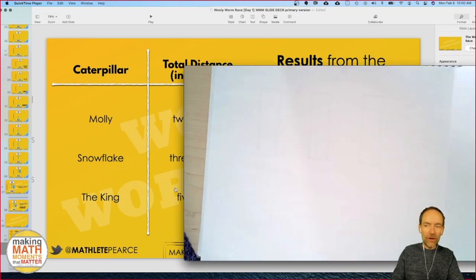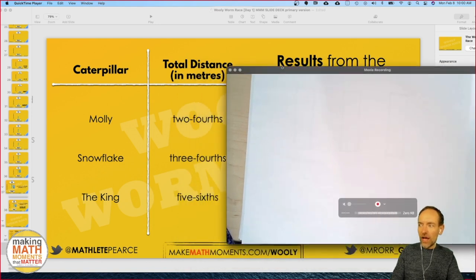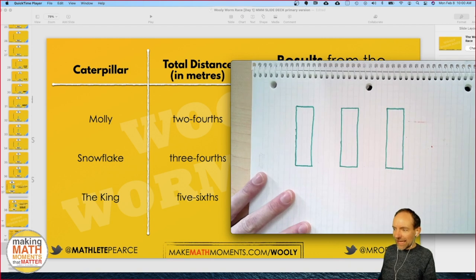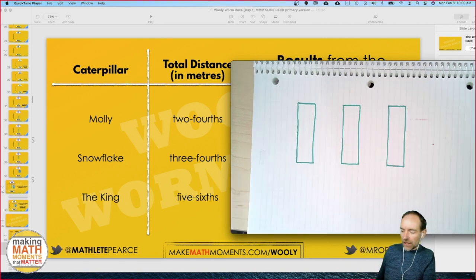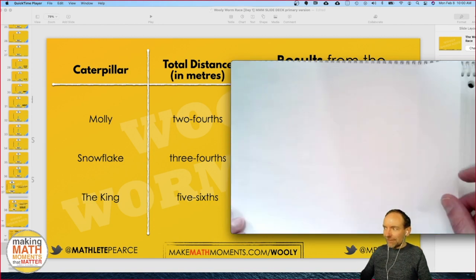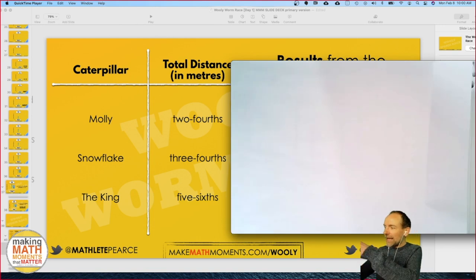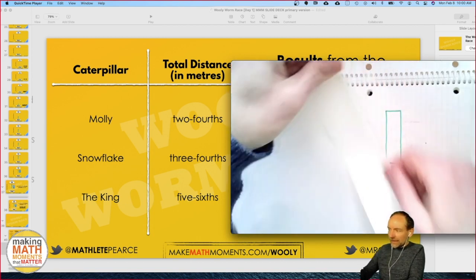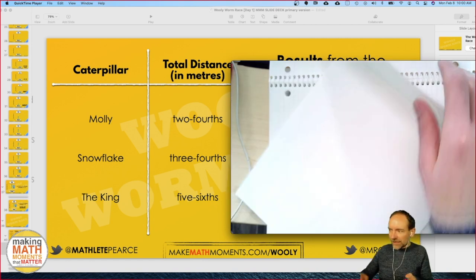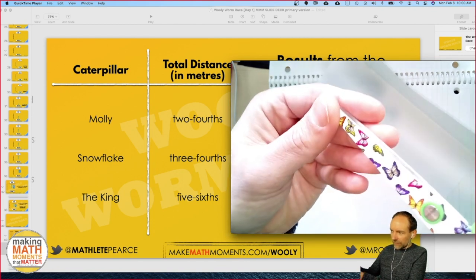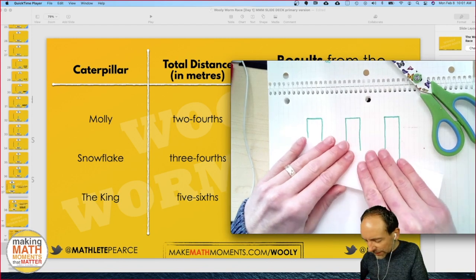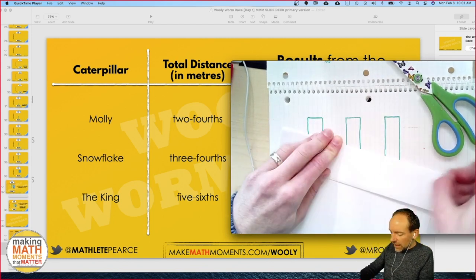Here are the top three racers for this race. Caterpillar Molly went two-fourths of the way. Snowflake went three-fourths of the way. A lot of people said three-fourths. Maybe Snowflake is the winner. I don't know yet. And the king went five-sixths of the way. What I'm hoping we can do, and I want to build on what Sir had done with you last week, it sounds like you did a lot of paper folding for fractions. I'm wondering if you have a piece of paper around.